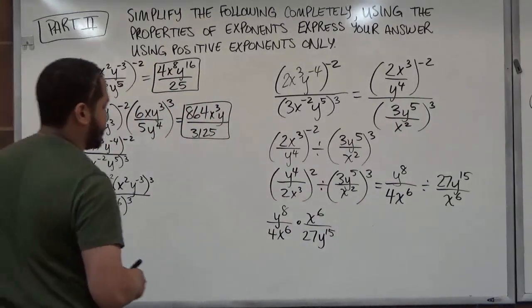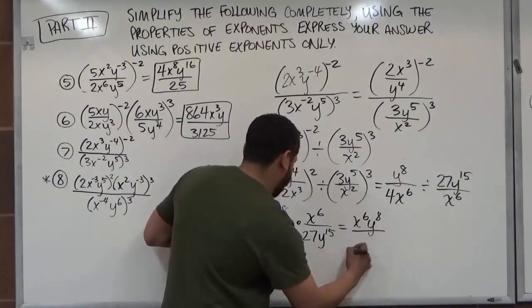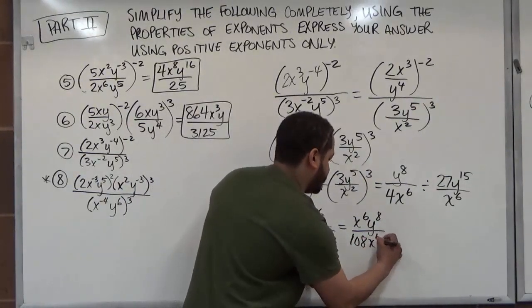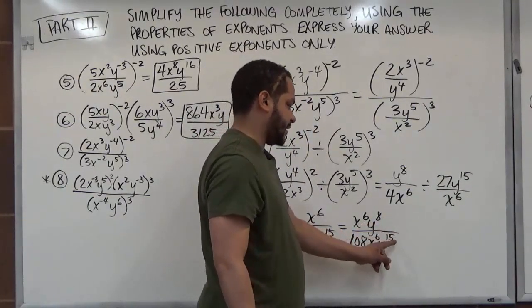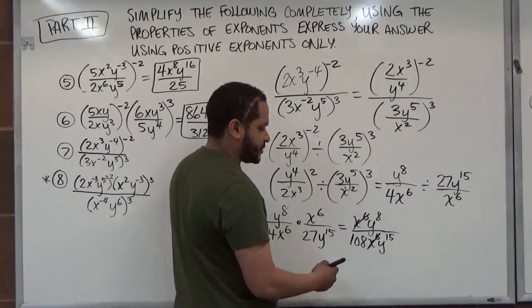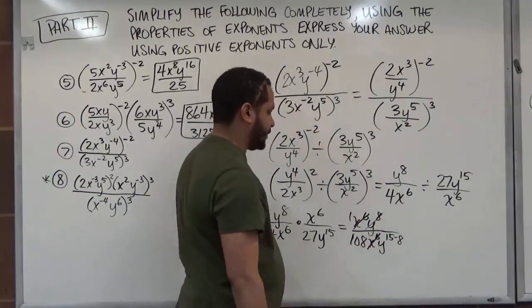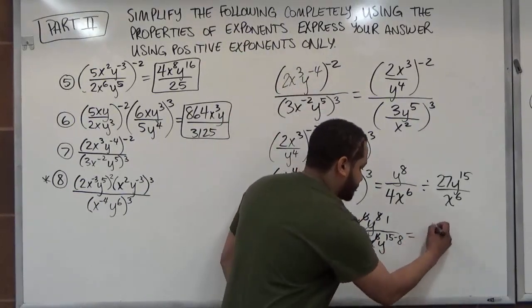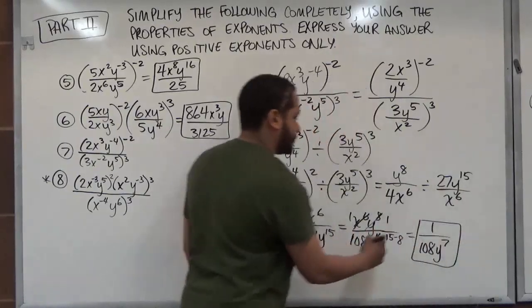Now to simplify: x to the sixth are common — merging them we have x to the sixth, y to the eighth, over 4 times 27 which is 108, and x to the sixth, y to the fifteenth. The denominator's exponent for y is greater than the numerator's — subtract the eighth from the fifteenth. The x to the sixth terms cancel to one. Subtracting eight from fifteen: we have 1 over 108, y to the seventh power — that's our solution for this problem.